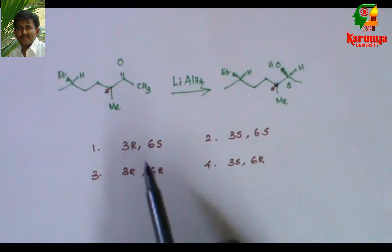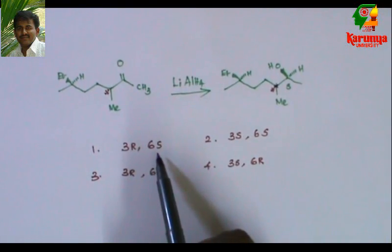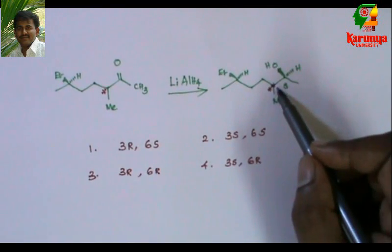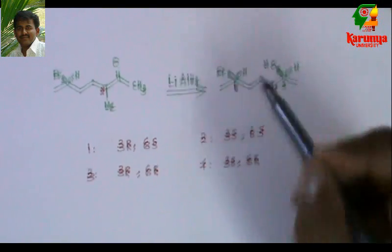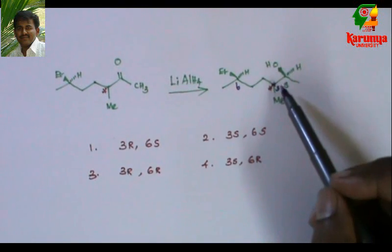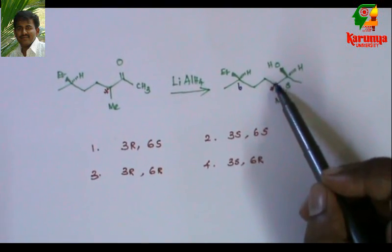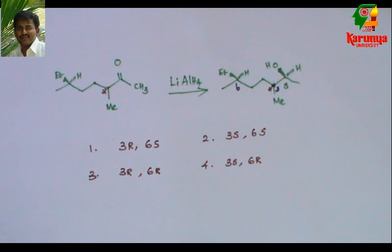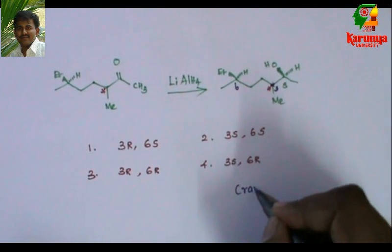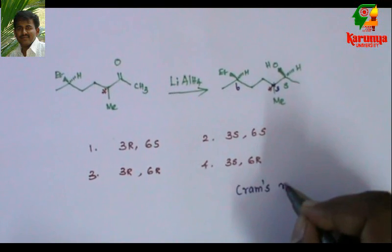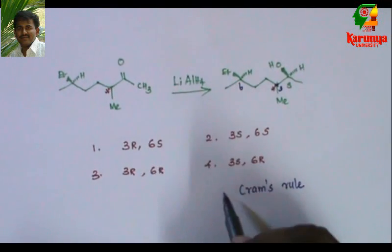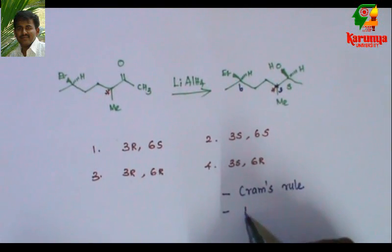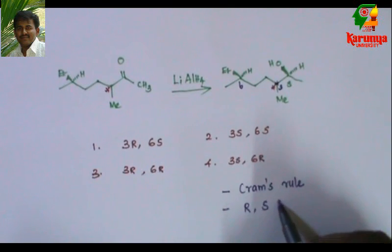The given options are here: 3R and 6S, so this portion is 3 and this is 6. What is the stereochemistry on this carbon as well as this one? So whether it is RS, RR, SS, or SR. In order to solve this, you should know Cram's rule and assigning R and S configuration.